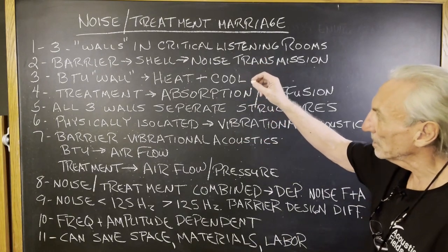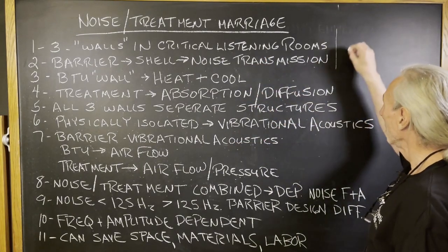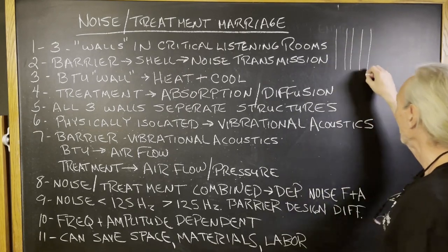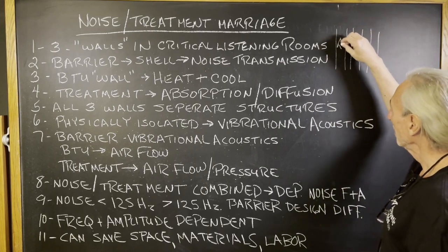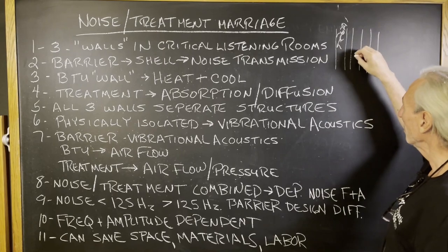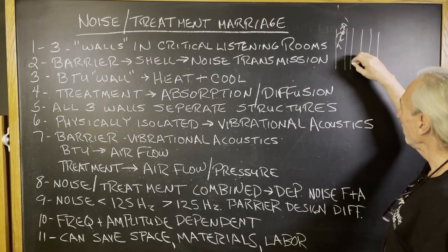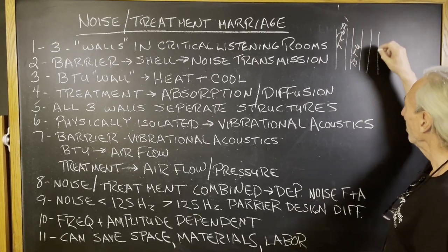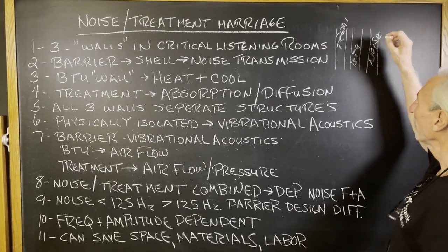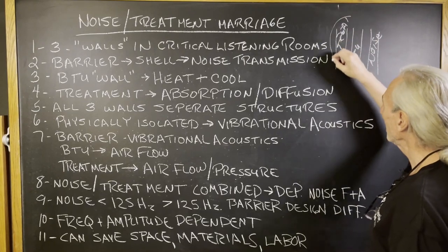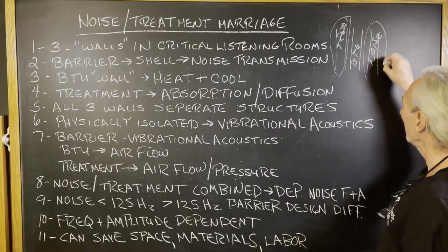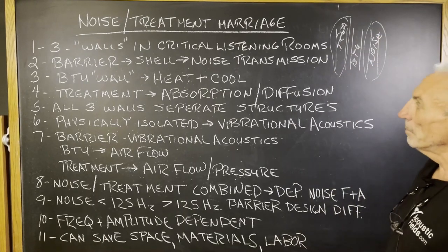I wanted to use this to get your attention because we have three walls that we have to be concerned about when we're dealing with noise. We have the treatment, which is usually the wall inside the room — which is absorption and diffusion. Then we have the BTU wall, which is hot and cold. And then we have the barrier wall, which is noise. Sometimes we can marry these two — usually they're separate structures — but sometimes we can marry the barrier and the treatment wall together.